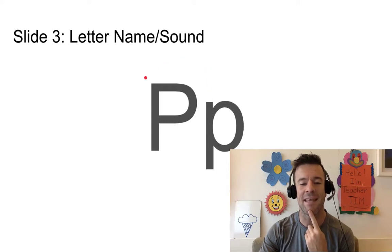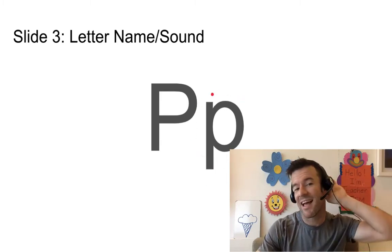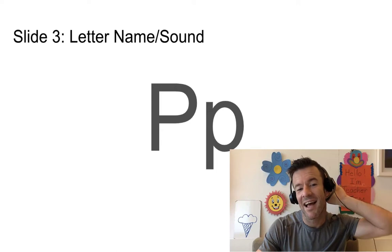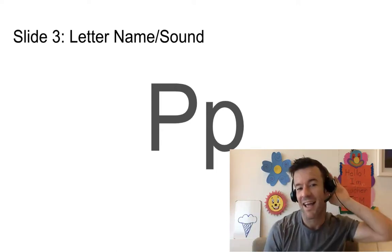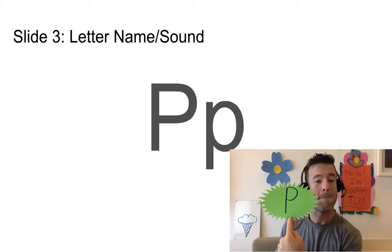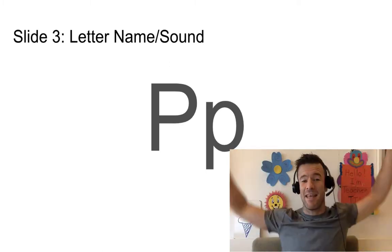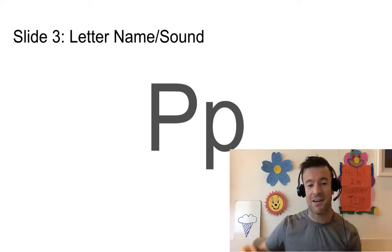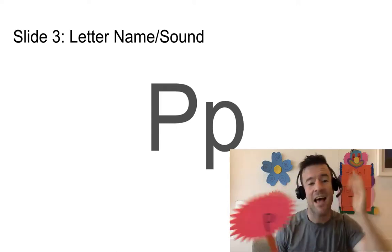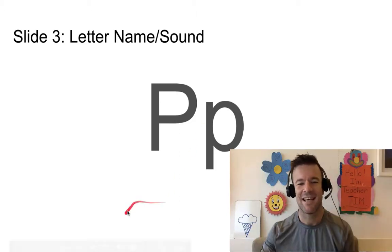All right. Big P. Yes. Small P. Yes. Good. P, P, P, P. Good. P, P, P, P. Very good. Good job, Alex. Alex. Big P. Yes. Big P. Very good. I am happy to see you, Alex. All right. Small P. Small P. Yes. Very good, Alex. All right. Let's go.